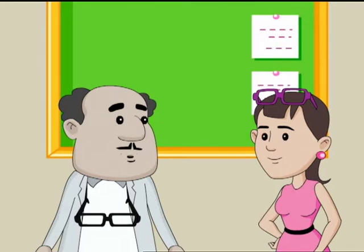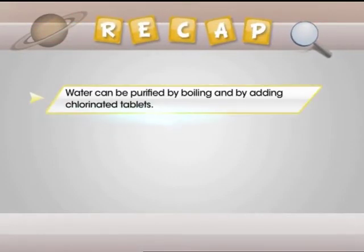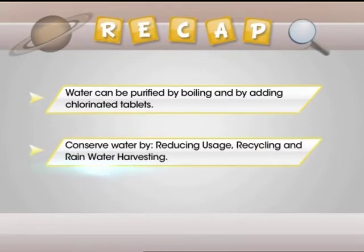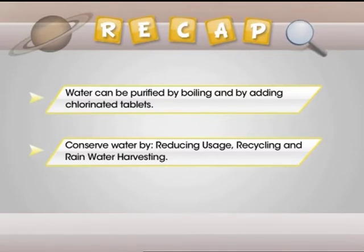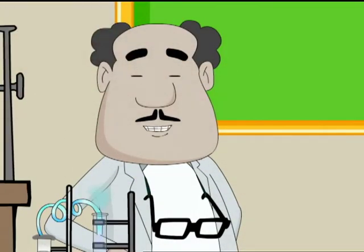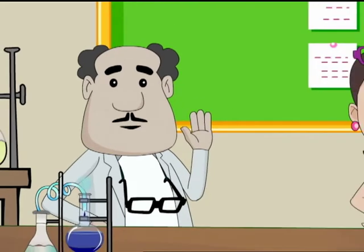Binny, it is necessary to retain all that we learn, so let's have a quick recap. Water can be purified by boiling and by adding chlorinated tablets. Water can be conserved by reducing the usage of water, by recycling wastewater, by rainwater harvesting, and by using water-efficient taps and shower heads. That's all for the day — see you guys later in another episode of Science for Juniors. Till then, take care! Bye!